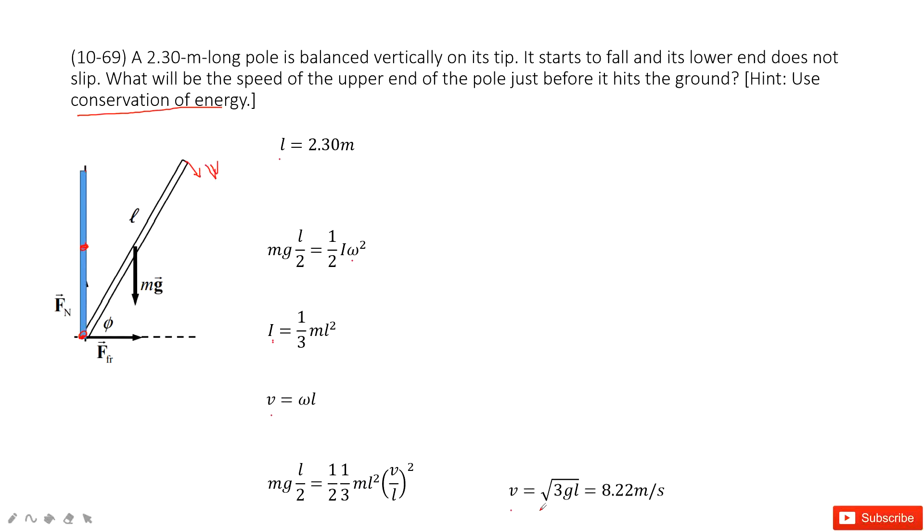So from this function, you get V equal to square root of 3gL. G is a constant, L is given. So you can get the final answer there. Thank you.